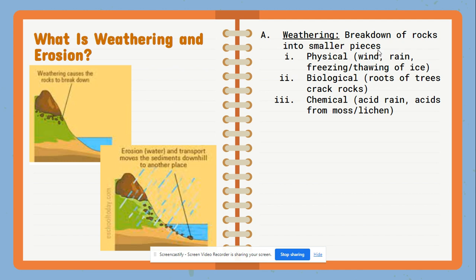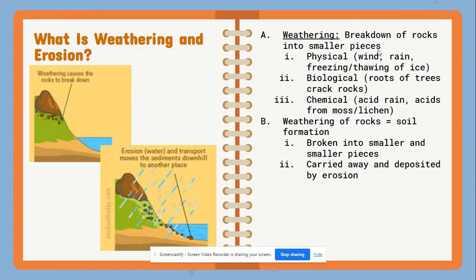Chemical weathering can be produced by pioneer species such as mosses and lichens — those species come in as the first ones to occupy an unused ecosystem space that's simply bare rock. They release chemicals that help to break down that rock. That weathering of rock, whether physical, biological, or chemical, over time is going to create a soil layer, breaking it down into smaller and smaller pieces.